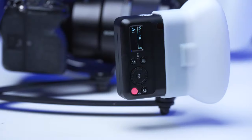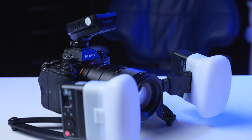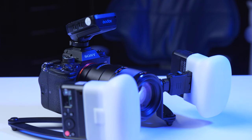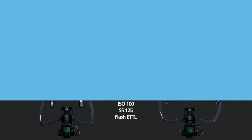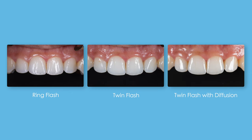This Godox twin flash bracket also comes with diffusion attachments, similar to soft boxes. Diffusion softens the light to reduce specular highlights, smoothing them out to make a more aesthetically appealing image. However, specular highlights are actually key to demonstrating texture, so it's really a decision based on what you're aiming to achieve.